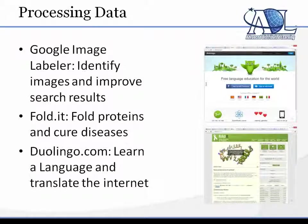On the processing data side, the oldie but goodie in that space is the Google Image Labeler. This is a game where two people play together and identify images, and the data being collected was used to improve search results for Google Images.